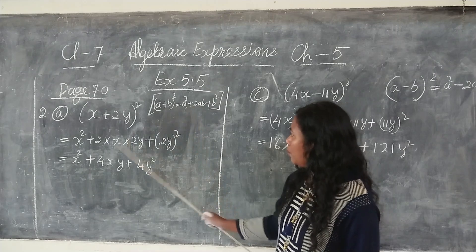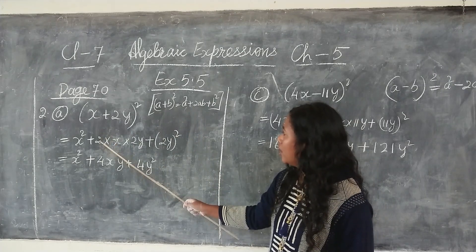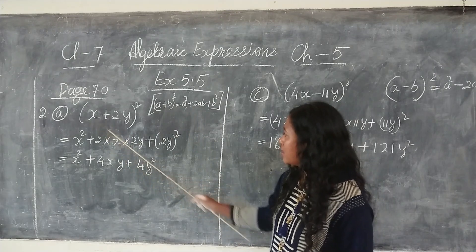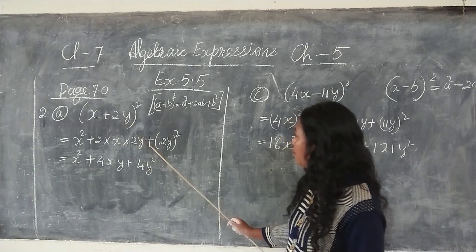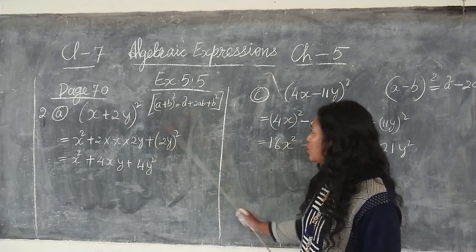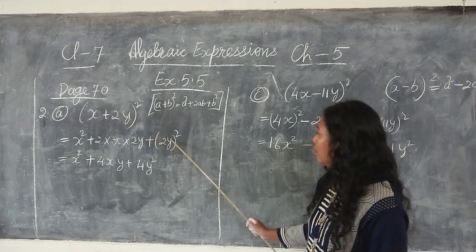So same, what is here in the formula we are calling here. So plus 2x into 2y plus b the whole square, so 2y the whole square.